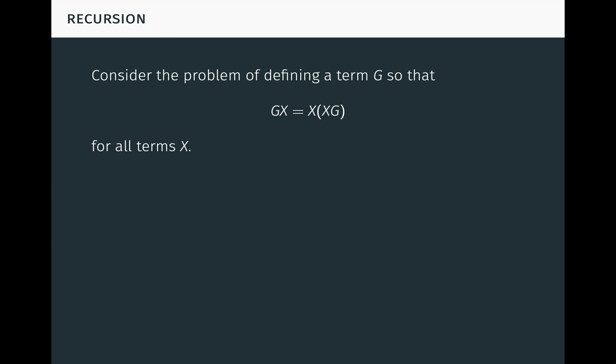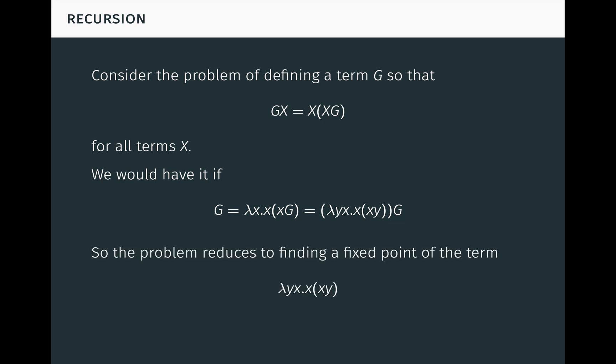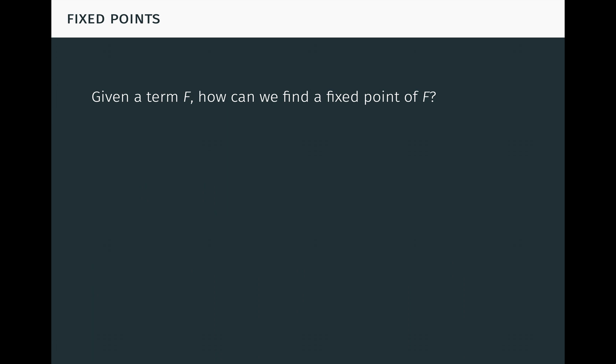How can we define such a g? We would have what we want if g equaled the term lambda x x of x g, which is just the result of applying the term lambda y x x of x y to g. So the problem reduces to finding a fixed-point of the term lambda y x x of x y.